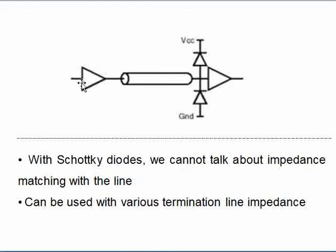With series and parallel resistance termination, the resistors must be matched to the line impedance. Schottky diodes don't have any impedance, so there's no need to match them to the line impedance — they can be used across lines with different impedances. If you have various loads connected along the channel, you don't need to worry about impedance variation, and you can place the diode at any reflection point.